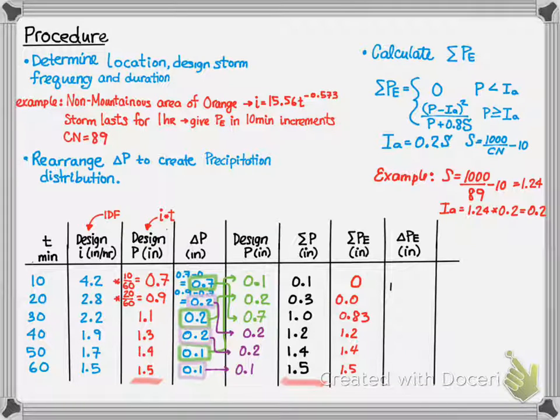Finally, we're going to do a change in excess precipitation. So, 0 minus 0, 0 minus 0. 0.83 minus 0 gives us 0.83. 1.2 minus 0.83 gives us 0.37. 1.4 minus 1.2 gives us 0.2. And 1.5 minus 1.4 gives us 0.1. So, our excess precipitation for this example is 0.83, 0.37, 0.2, and 0.1. We'll do further examples in class to further solidify this concept.